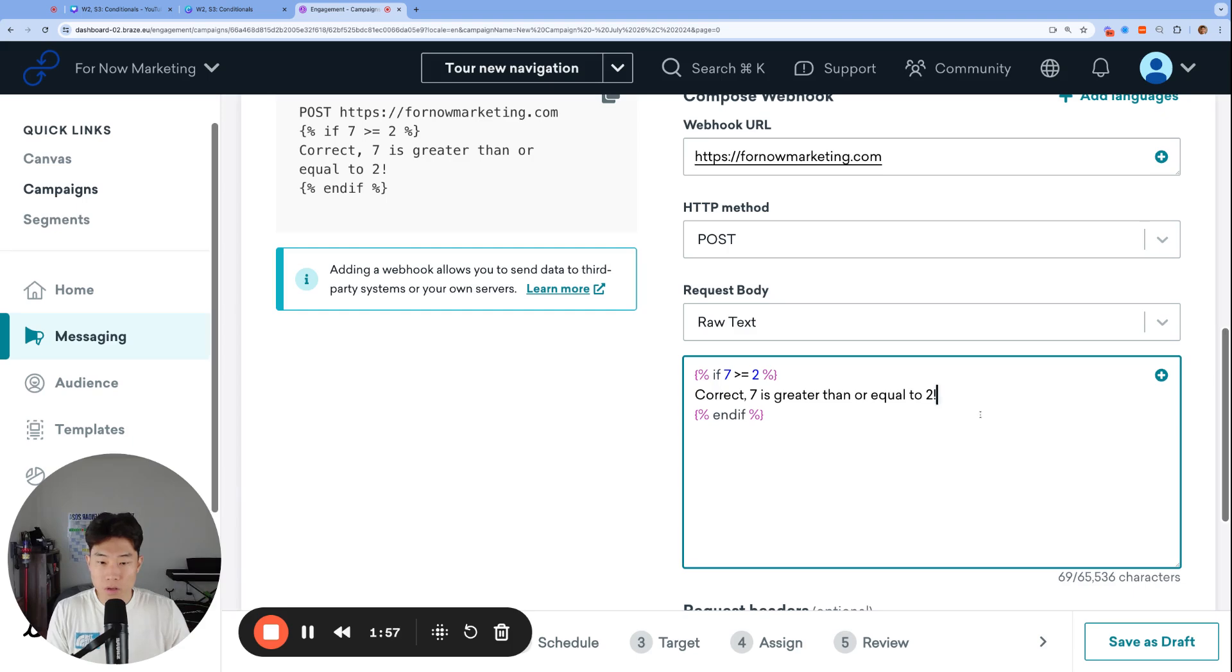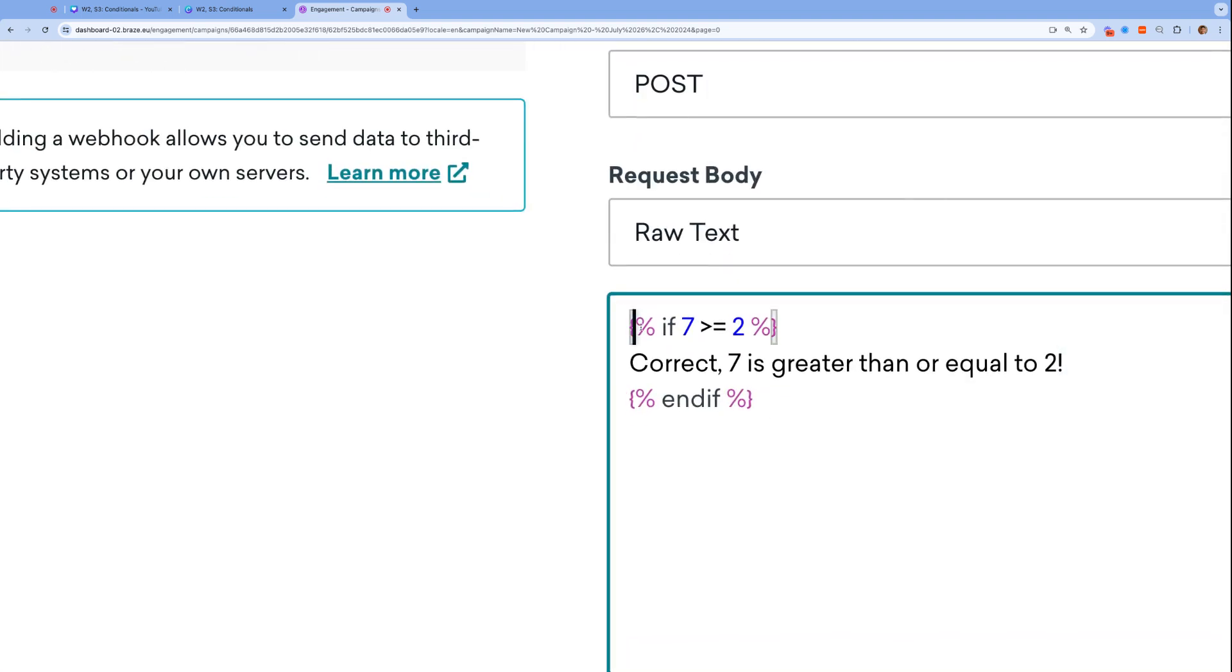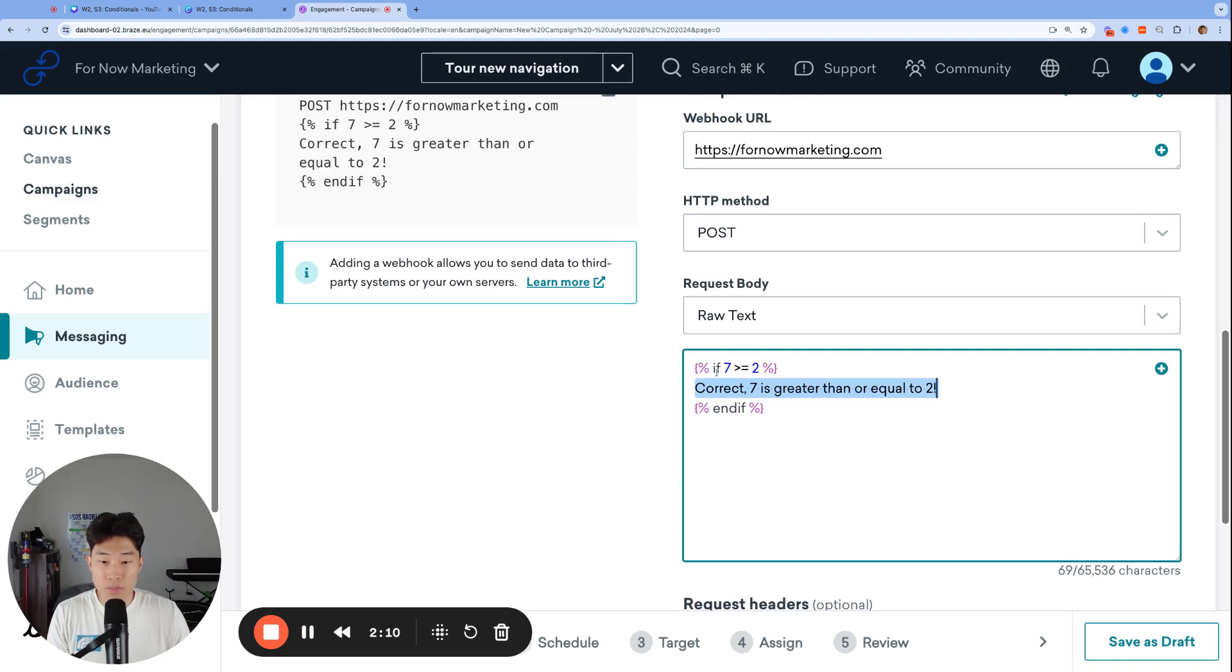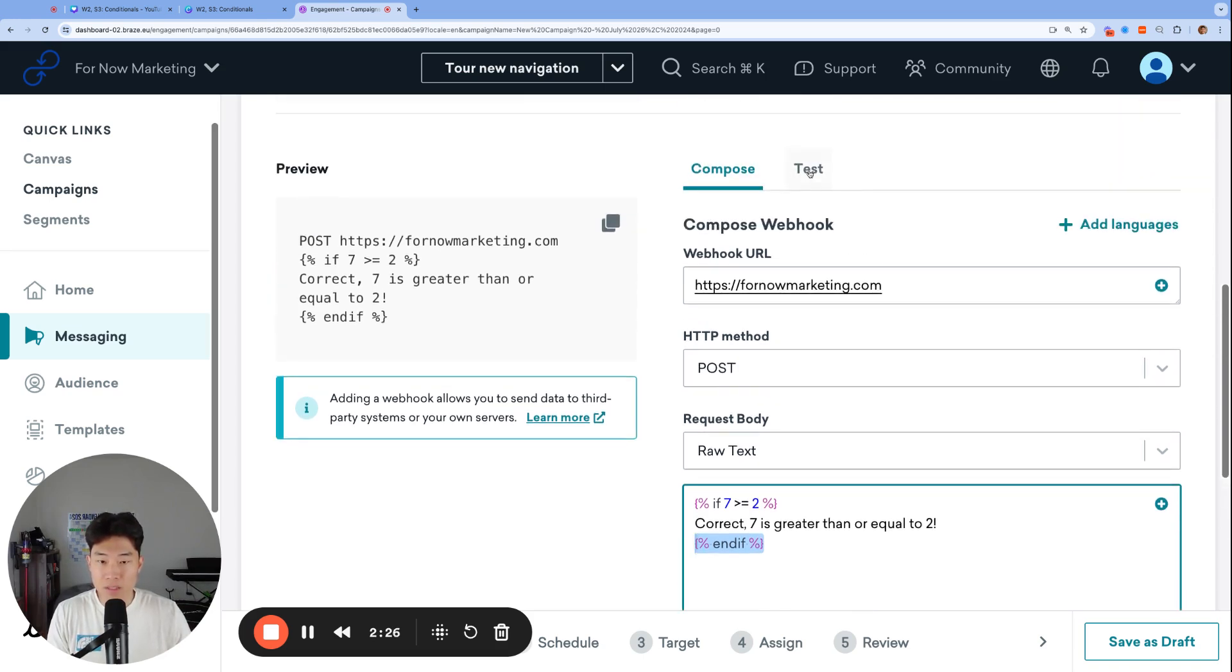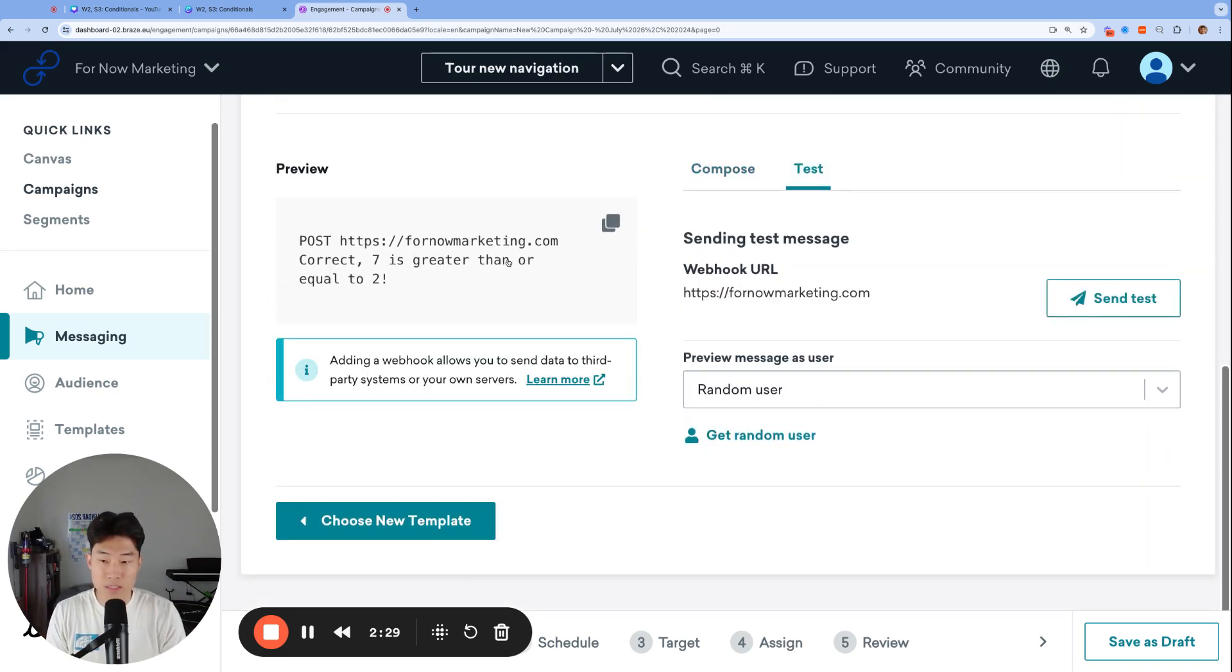Let's see what that looks like in Braze. So once again, here we have our curly bracket percentage, the word if, and our conditional statement, 7 is greater than or equal to 2, percent, curly bracket. This is going to be our message or our code that's rendered since this if statement is, in fact, true. And then once again, that part is rendered because it is everything between the if statement and then the end if statement. And as always, every if statement needs a matching end if statement. Let's go ahead and test that, and we see that that does run successfully.